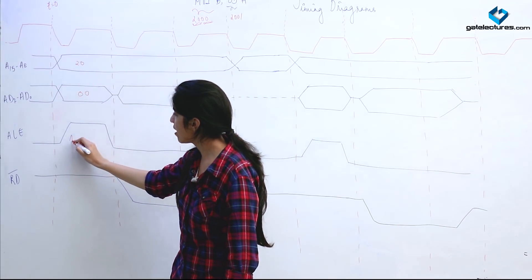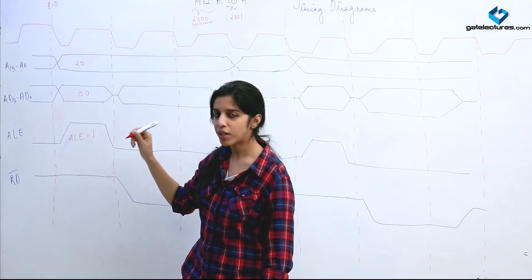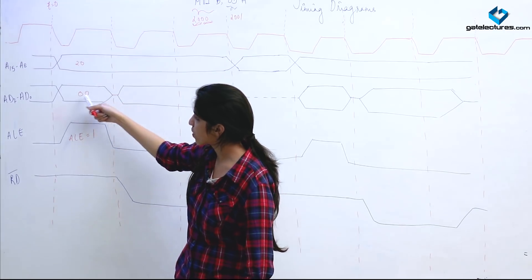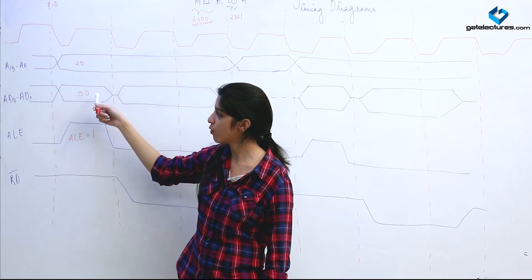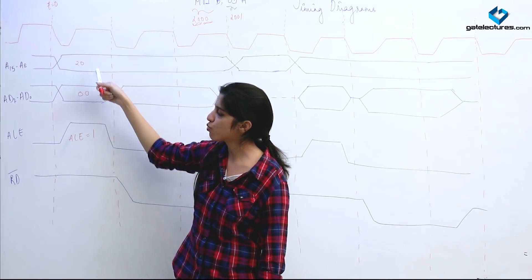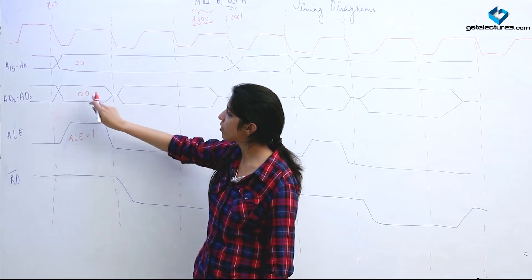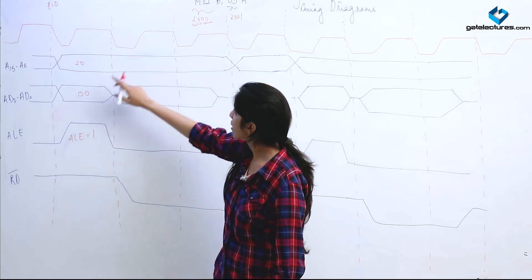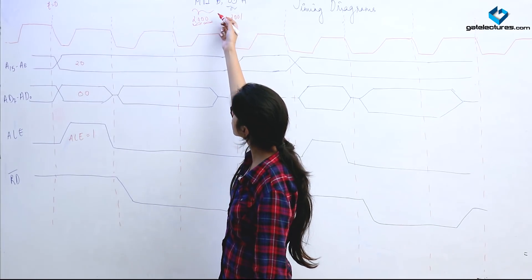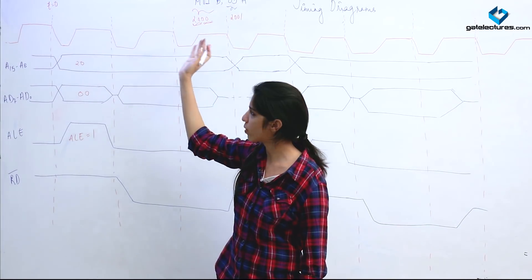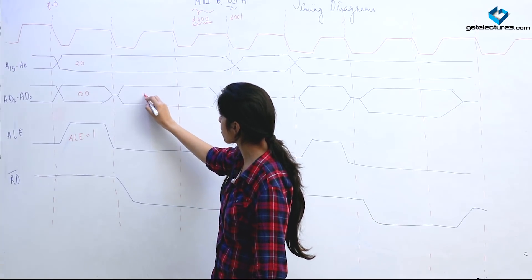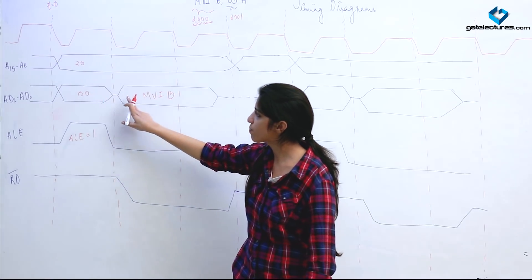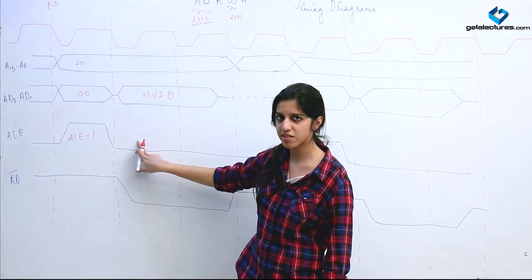We enable ALE (Address Latch Enable), making ALE = 1, so this bus behaves as an address bus carrying address 2000H. The processor goes to memory location 2000H, fetches the opcode — suppose the opcode is EF for MVI B. This opcode is loaded onto the data bus. Since ALE is now 0, the bus behaves as a data bus.